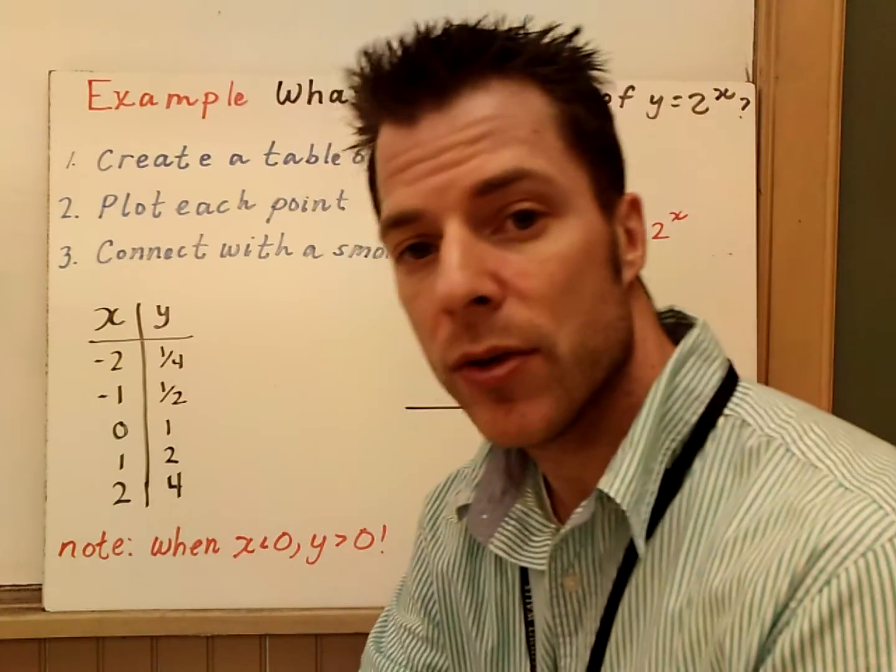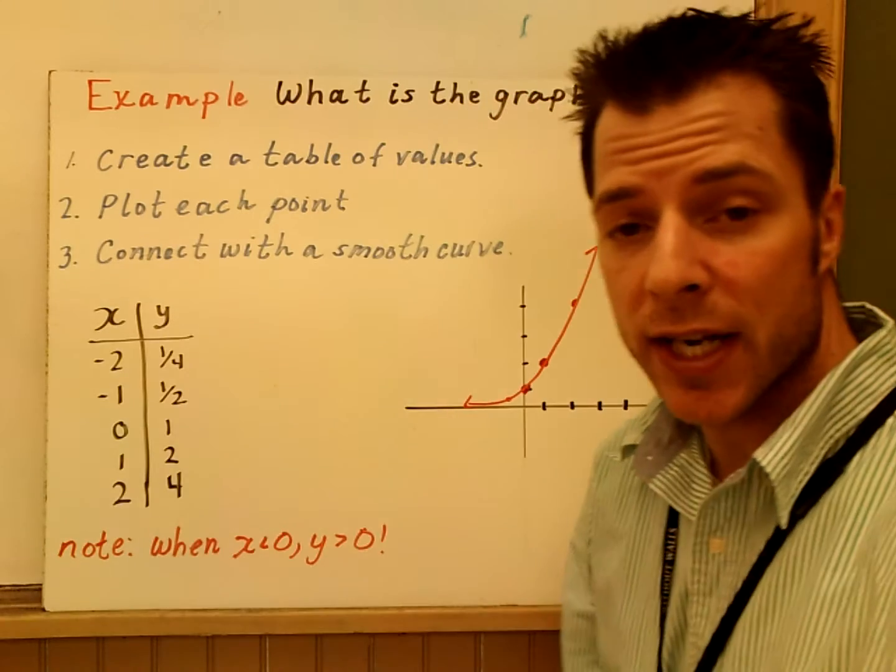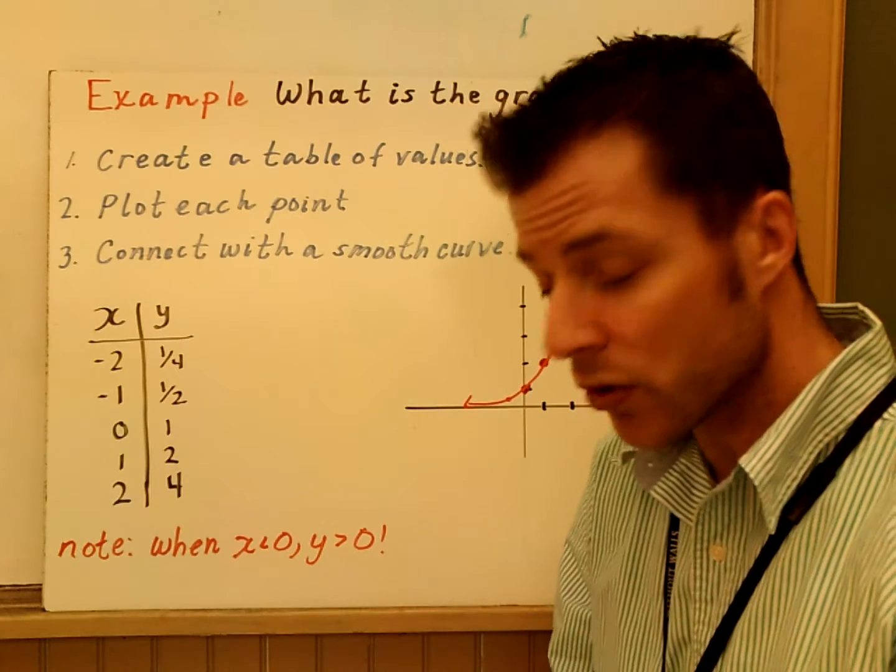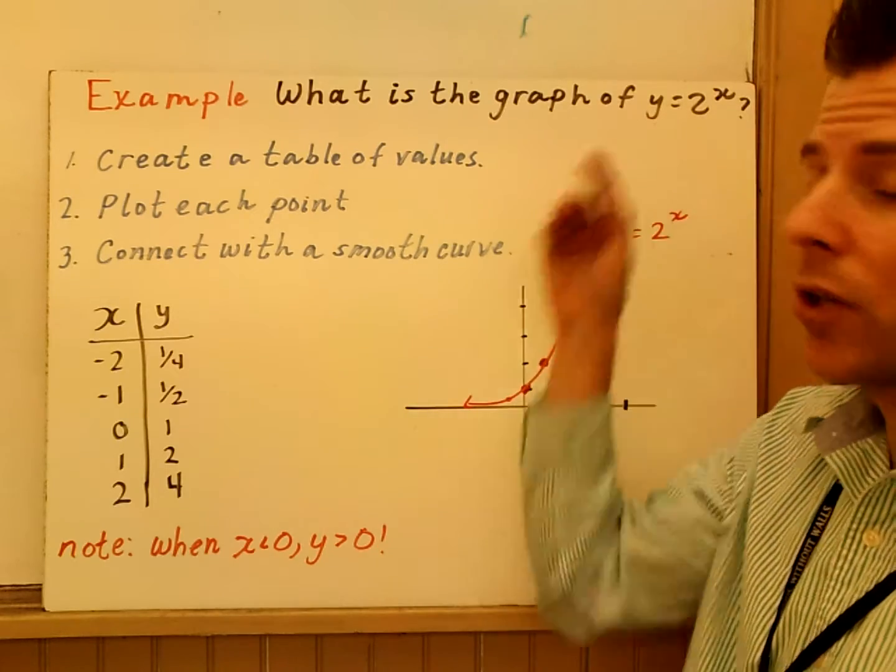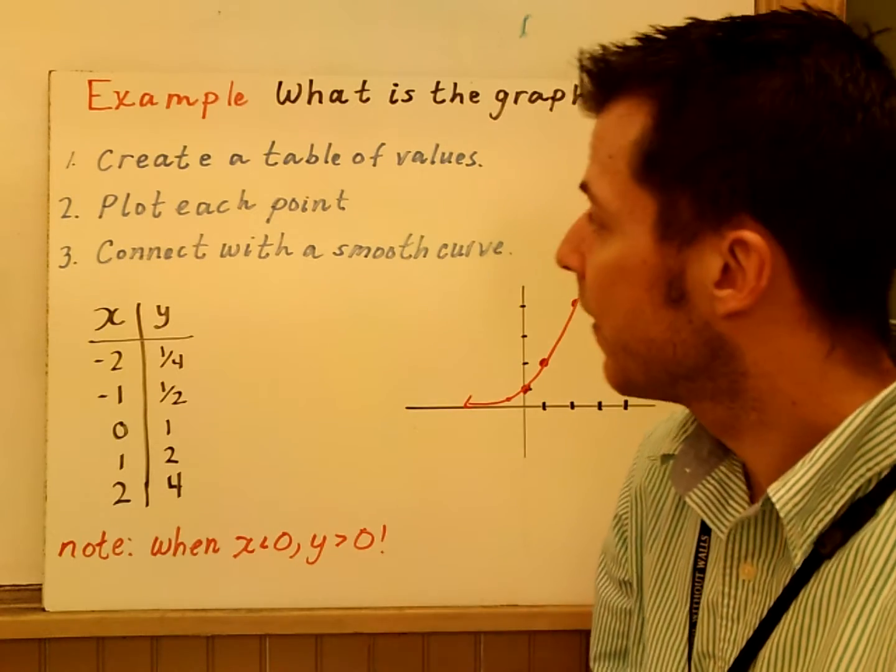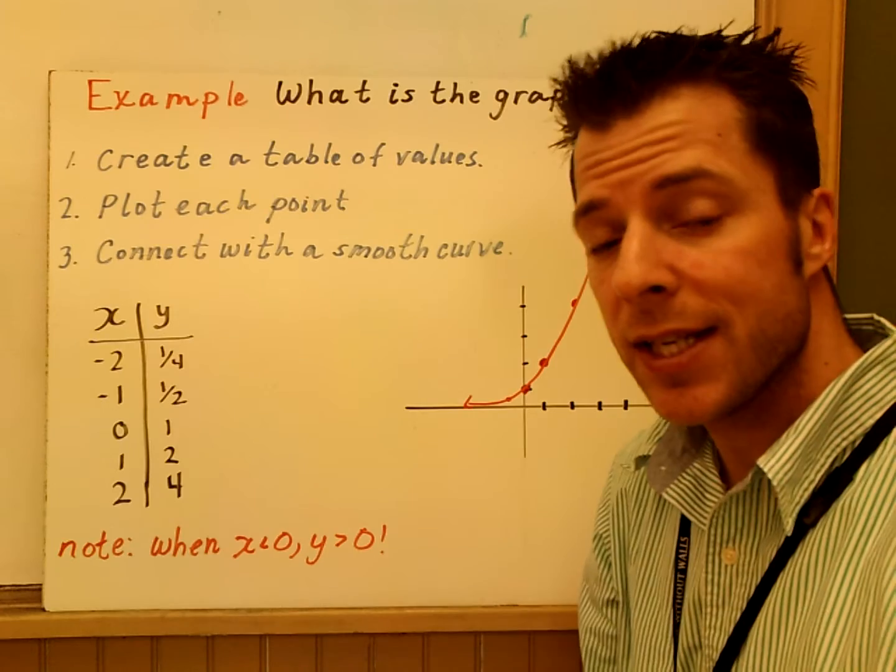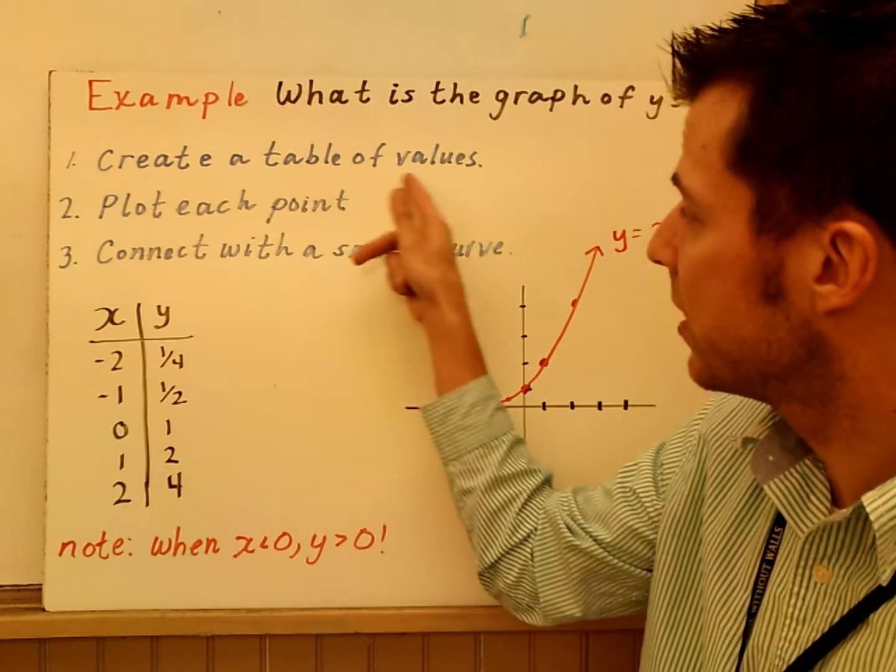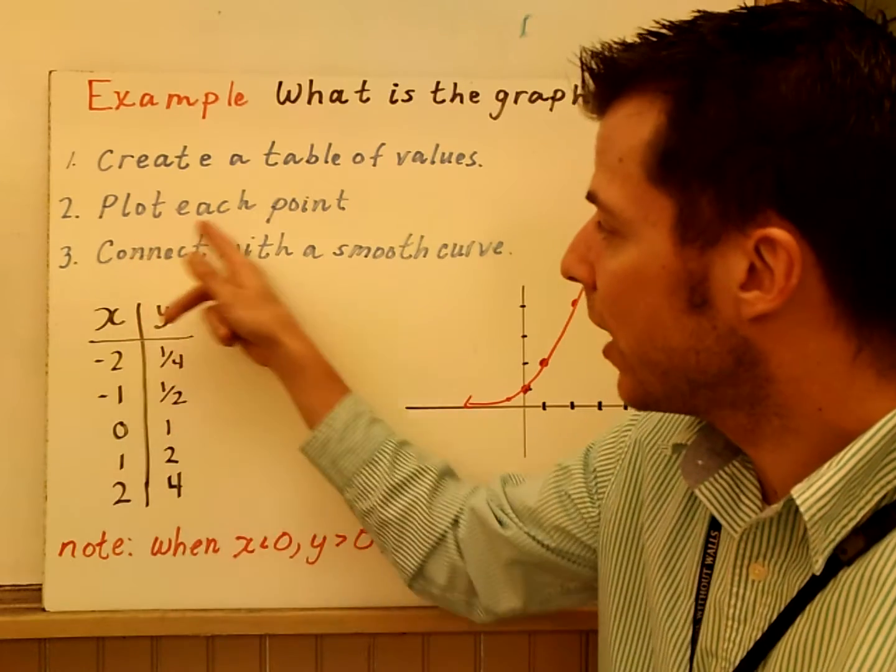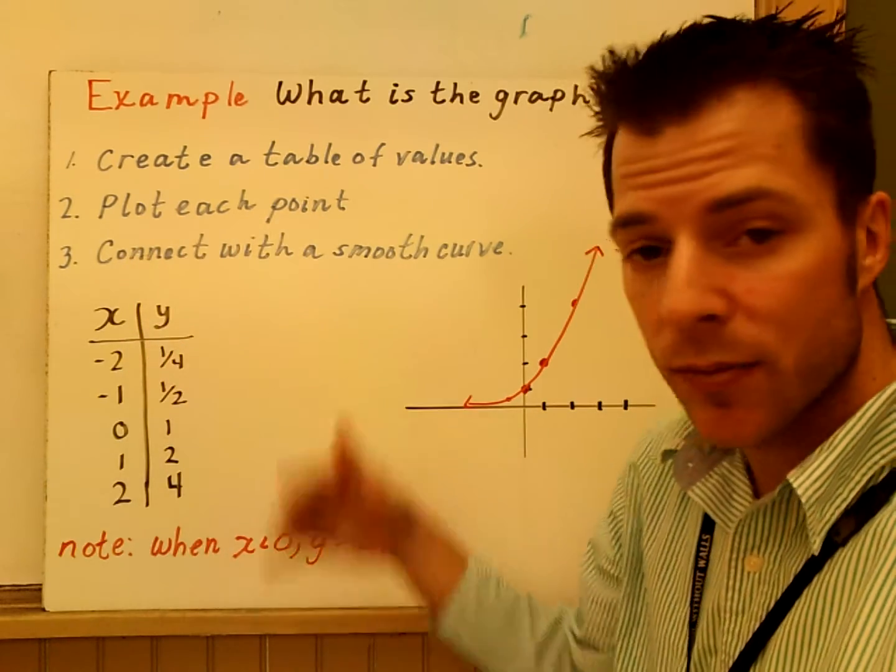What we're going to do is our first example is going to graph this exponential function. The first thing you've got to know is what does it look like. And so, to graph this function, we're going to graph y equals 2 to the x. For most of these, the easiest thing to do is just create a table of values. Number one, we're going to create a table of values. You're going to plot the points, and then you're going to connect them with a smooth curve.